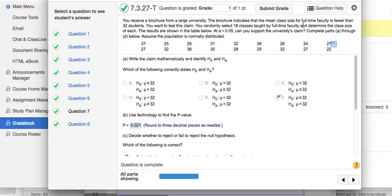So because there's no equality in that claim, we can see down here, letter F, that the claim of fewer than 32 falls into the alternative. So we have greater than or equal to 32 in the null.